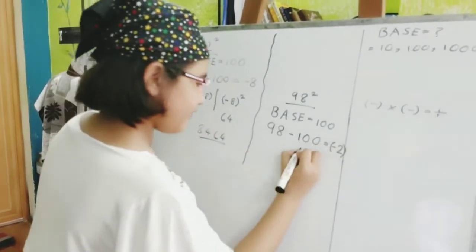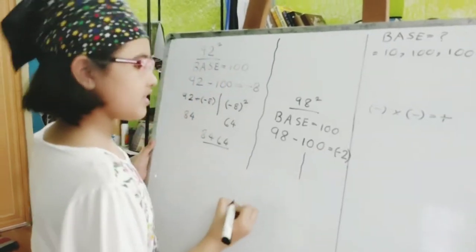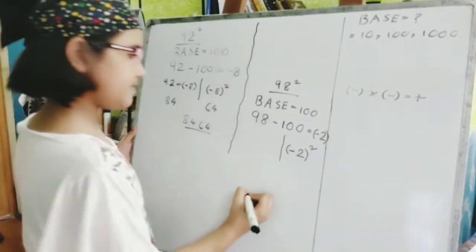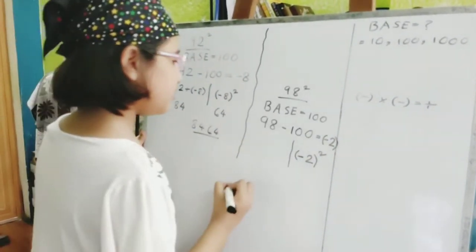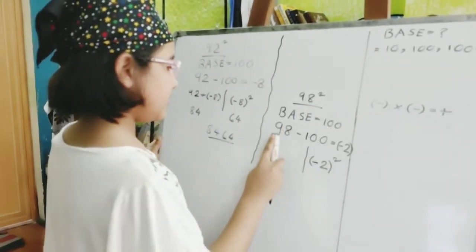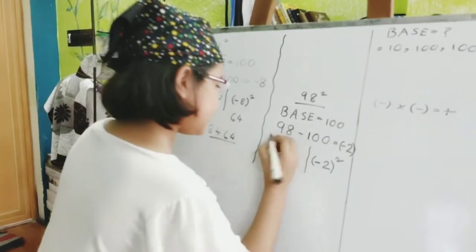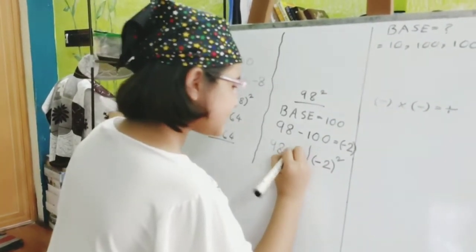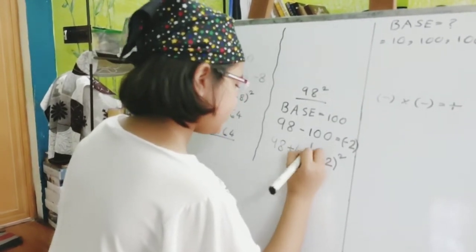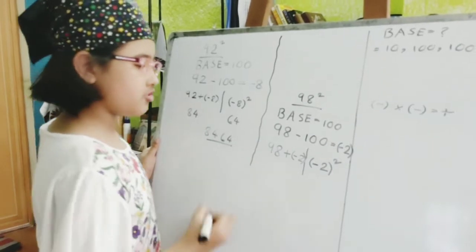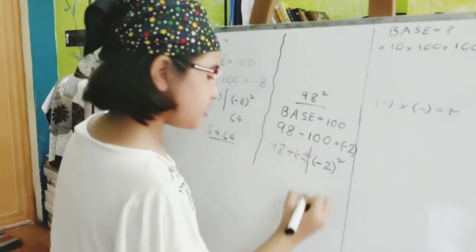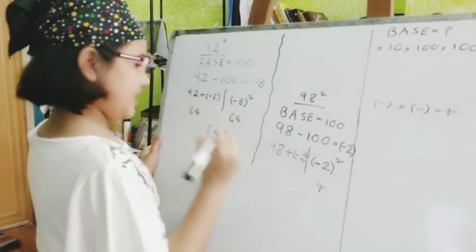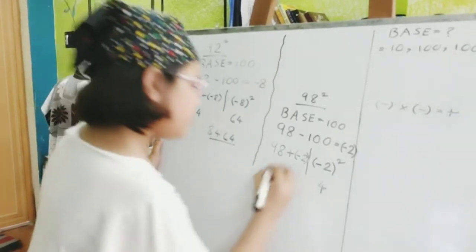Now, we have to divide this. At this side, we have to do the square of the difference. And, as here, we have to add this number with the difference. So, we're going to write 98 plus minus 2. Now, as we have to write the answers, we have to write the answers. 2 and 2 is equal to 4. And, 98 plus minus 2 is 96.